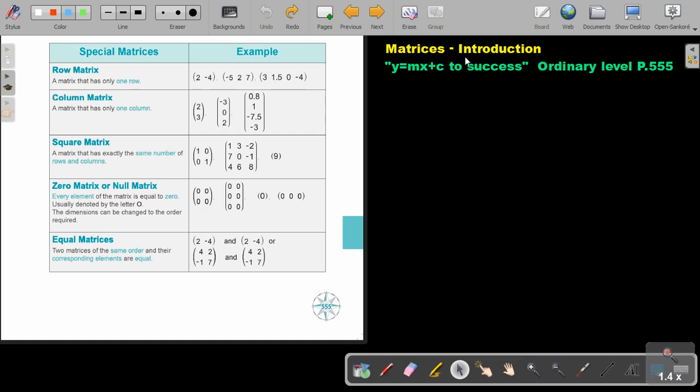Matrices. We are going to continue with the introduction. Let's look at special matrices. A row matrix. A matrix that has only one row. Can you see?